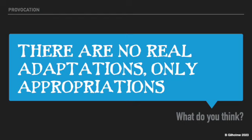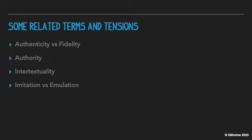The last thing I'll take you through is some related terms to look up and start thinking about in your own discussions of adaptation and appropriation: the tension between authenticity and fidelity, the concept of authority, intertextuality, and finally the tension between imitation and emulation.